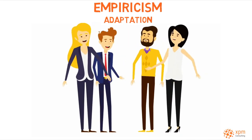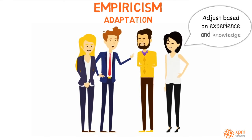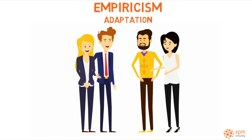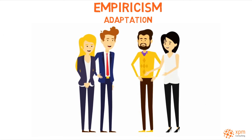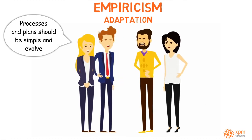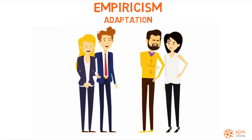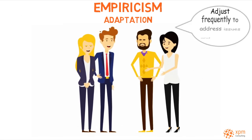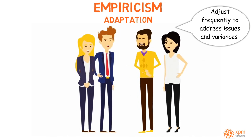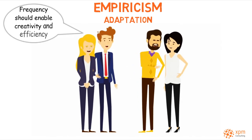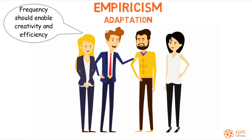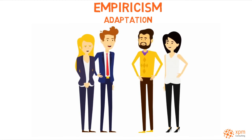The ultimate goal of empiricism is to adjust based on the acquired experience and knowledge. The adaptation pillar argues that processes and plans should be simple and evolve instead of detailed and prescriptive. The Scrum team should adjust them frequently to address issues and variances as soon as possible, with the frequency of adaptation tailored to enable creativity and efficiency.